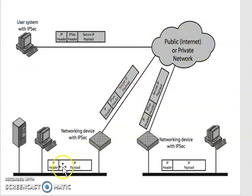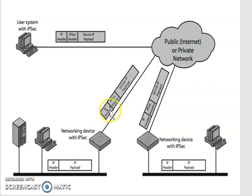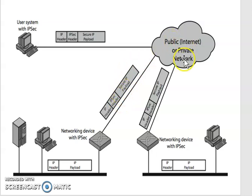Now let us see a scenario of IPsec usage. We can see networking devices such as routers using IPsec, and user systems with and without IPsec. When an IP packet goes from the network to the internet, it goes through the router. The entire IP packet is attached with an IPsec header along with the IP header, and the IP payload is encrypted with encryption algorithms before going to the public network.